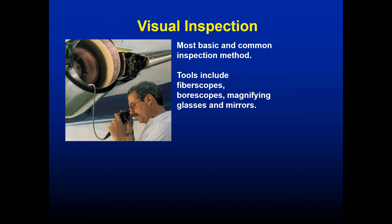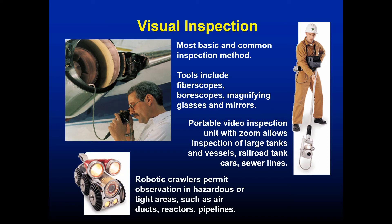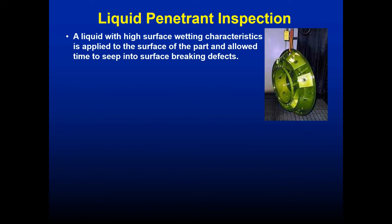Visual inspection tools include fiberscopes, borescopes, magnifying systems, microscopes, and mirrors to look inside different elements. Portable video inspection units with zoom allow inspection of large tanks and vessels, railroad tank cars, and sewer lines. Robotic crawlers permit observation in hazardous or tight areas such as air ducts, reactors, and pipelines, and are also used on the surfaces of tanks. Drones are increasingly used for tall structures.